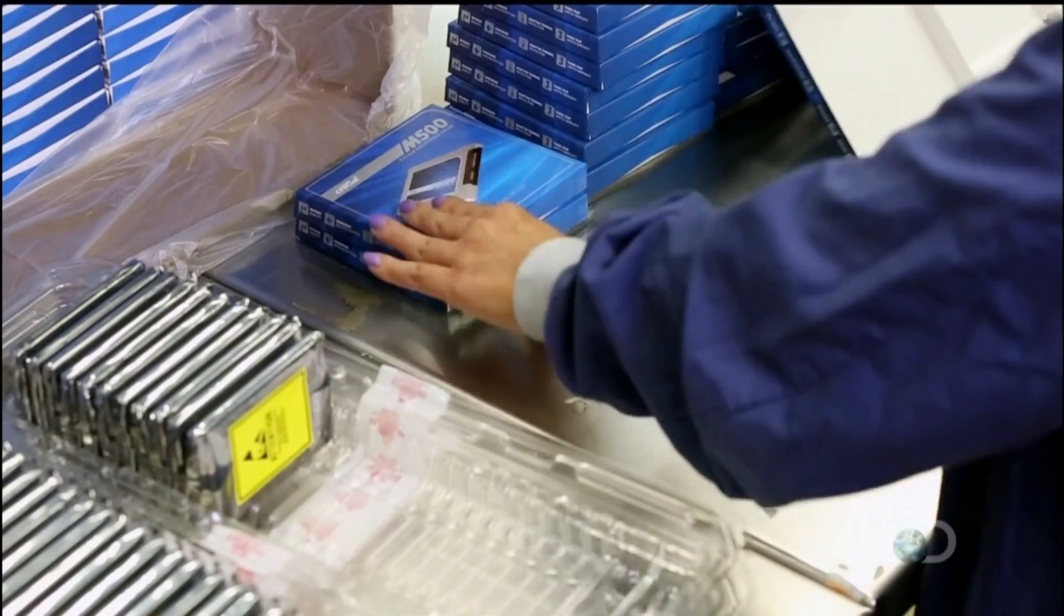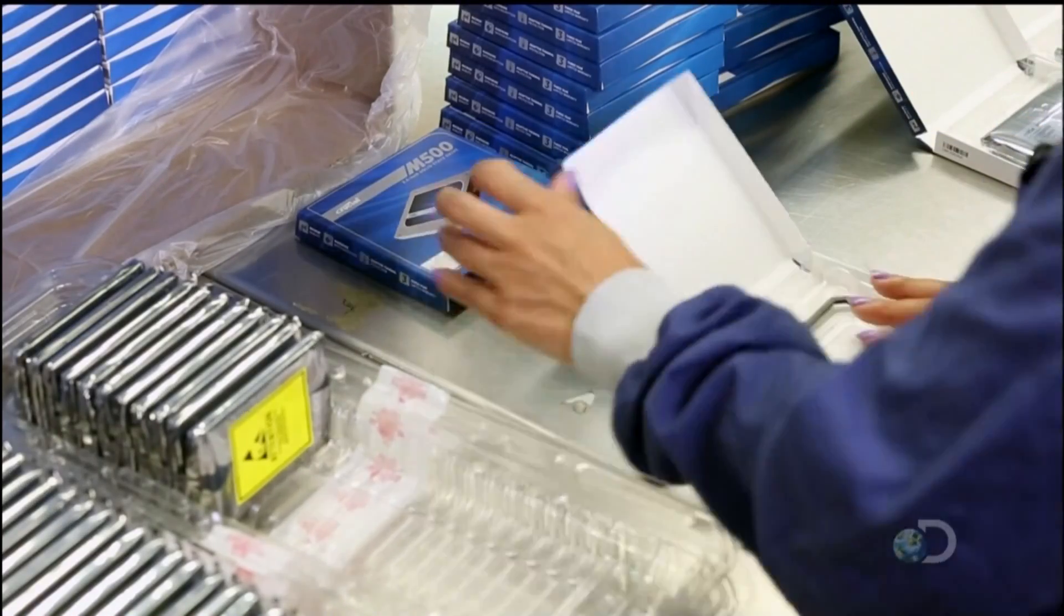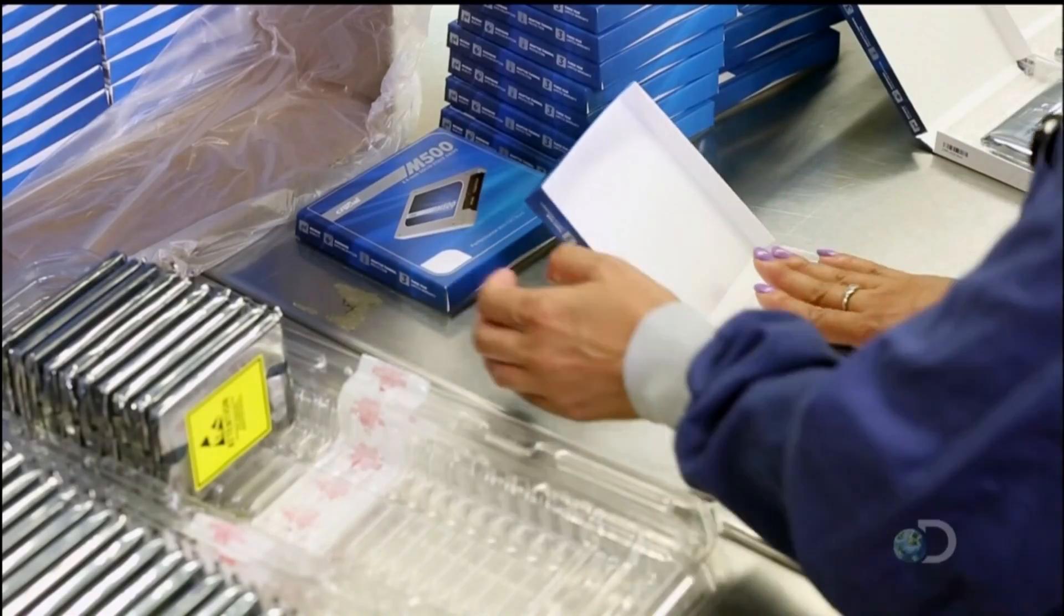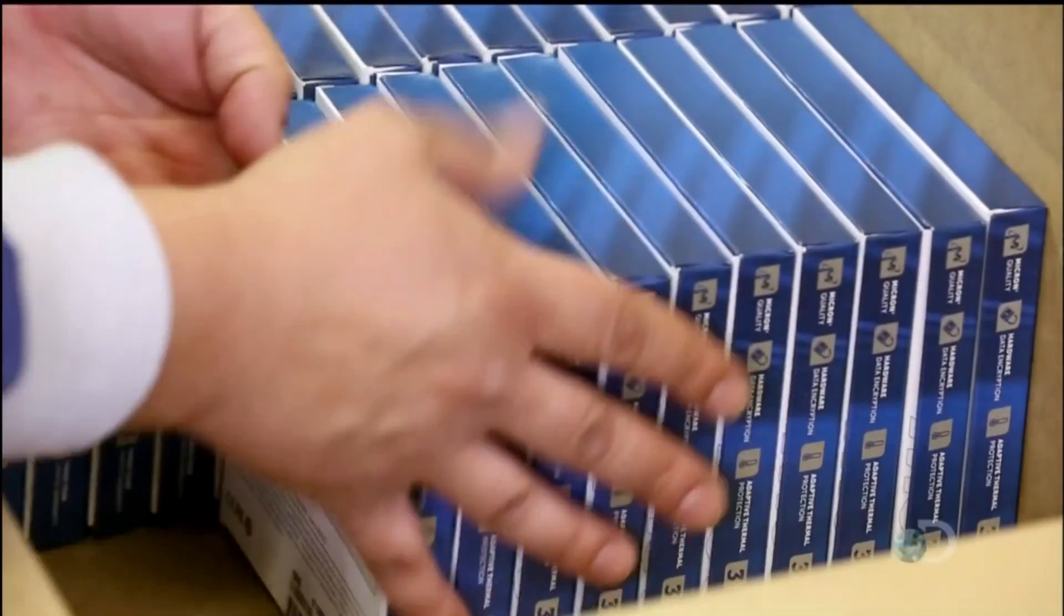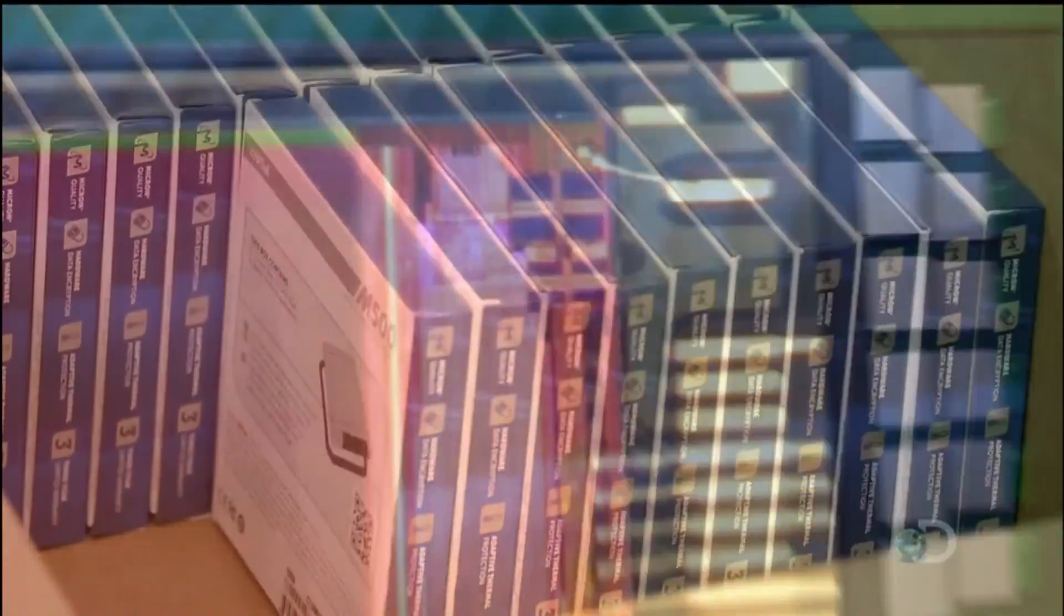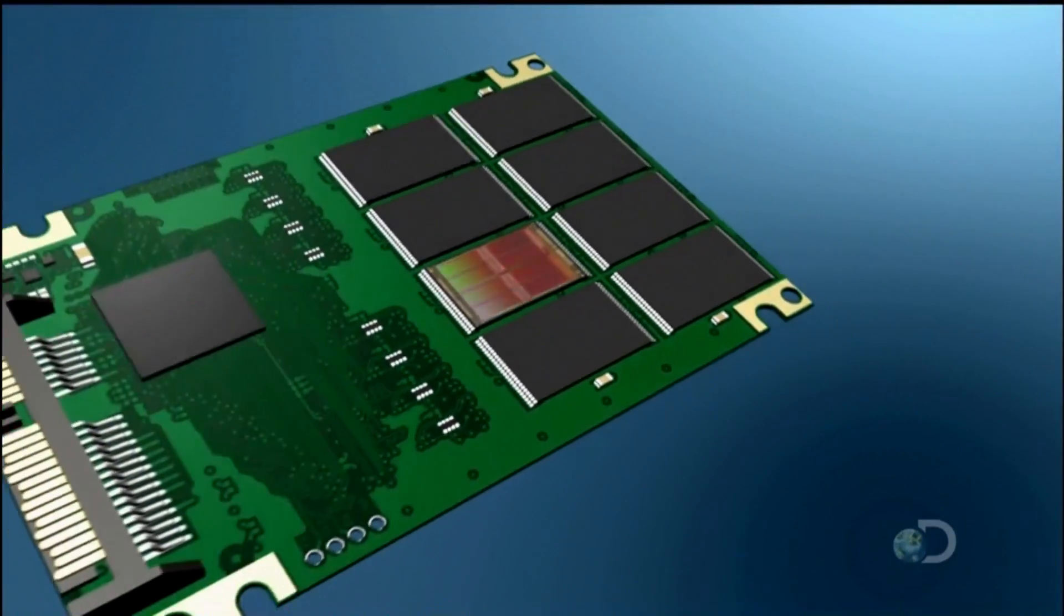Packaging is two-fold. First, a foil shield to prevent static electricity from damaging the drive. Then, a carton. And finally, into a shipping box, headed for a destination somewhere around the world.